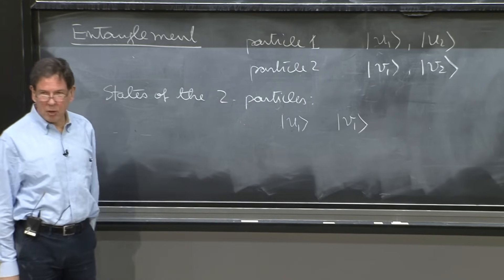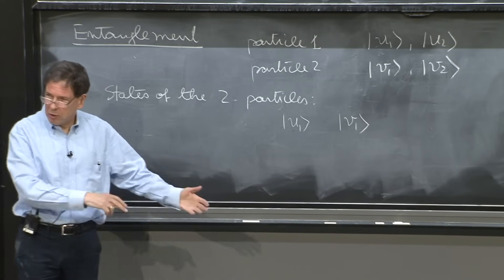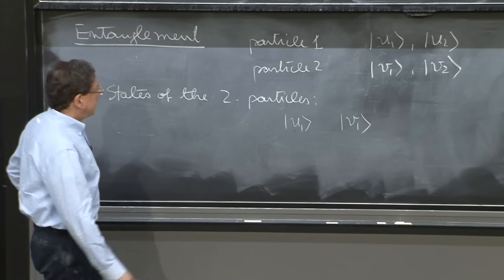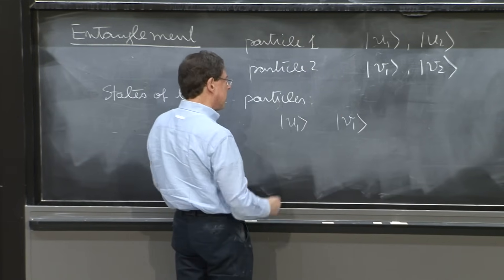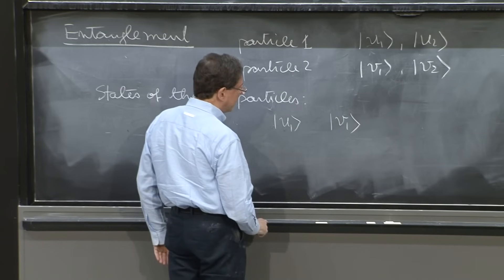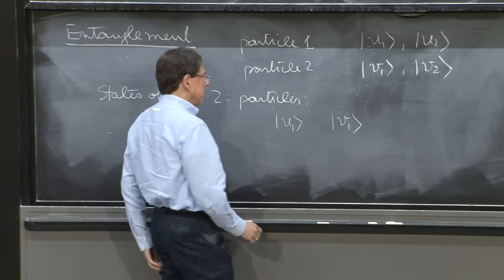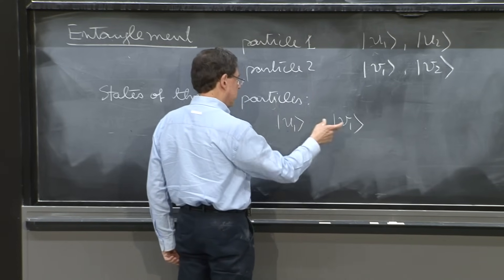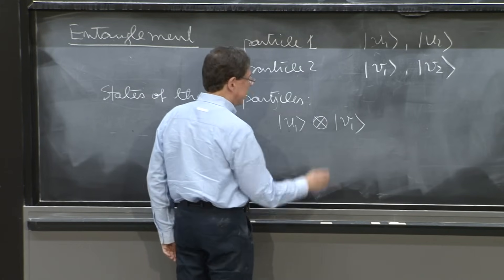And particle 2 could be doing v1. And in a sense, by telling you that, we've said what everything is doing. Particle 1 is doing u1, particle 2 is doing u2. And mathematically, we like to make this look like a state and write it in a coherent way. And we sort of multiply these two things, but we must say sort of multiply because it's a strange multiplication. We think of them as vectors or states. So how do you multiply states? You put something called a tensor product.